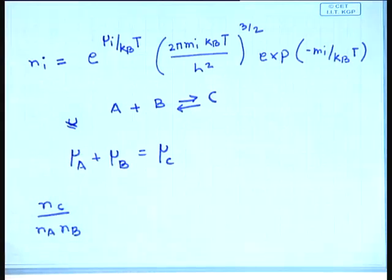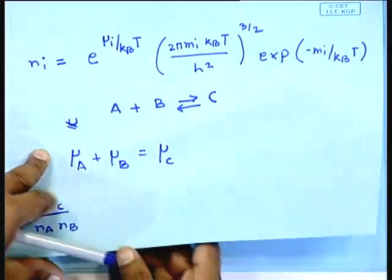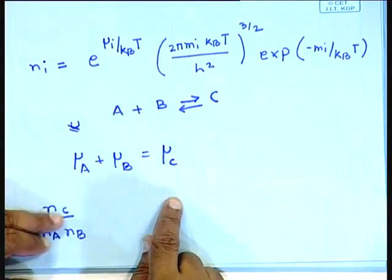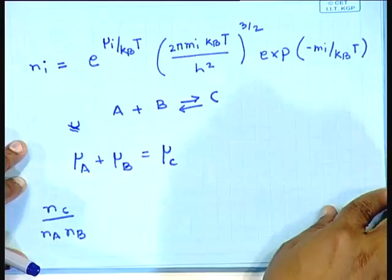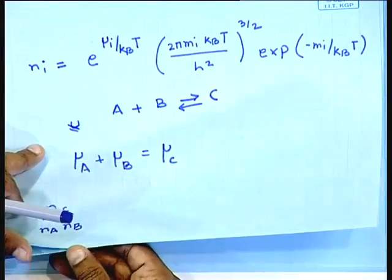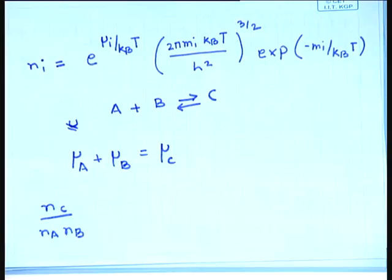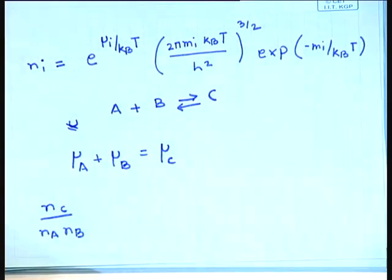What we are doing here is exactly analogous to the Saha ionization formula — we shall use that formula later in a subsequent lecture. Right now we are interested in the equilibrium of reactions between different nucleons. Now z_i protons and (a_i − z_i) neutrons combine to form a complex nucleus.